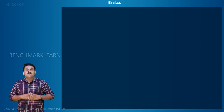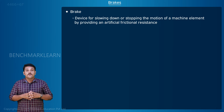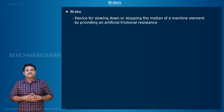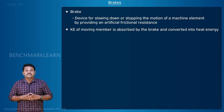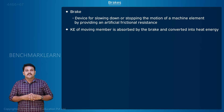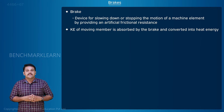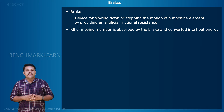In this video we are about to learn different types of brakes and their applications. A brake is a device for slowing down or stopping the motion of a machine element by providing an artificial friction resistance. The brake is forced against the moving member so that friction occurs between the contacting surfaces. The kinetic energy of the moving member is absorbed by the brake and converted into heat energy, which is usually dissipated into the surrounding medium such as air. This prevents the overheating of the braking element.